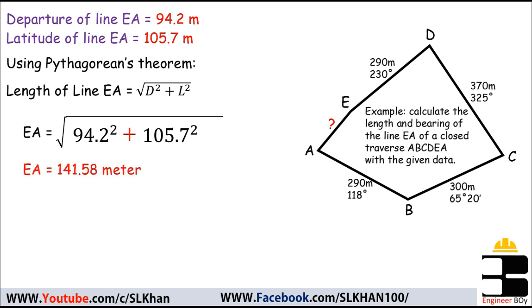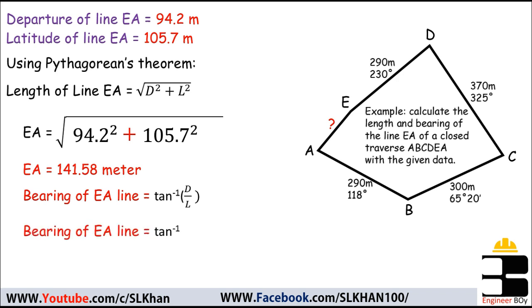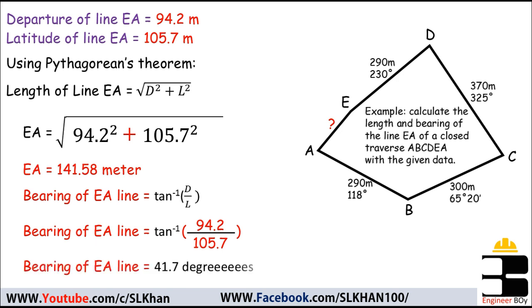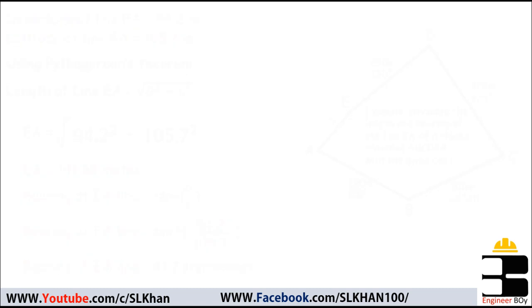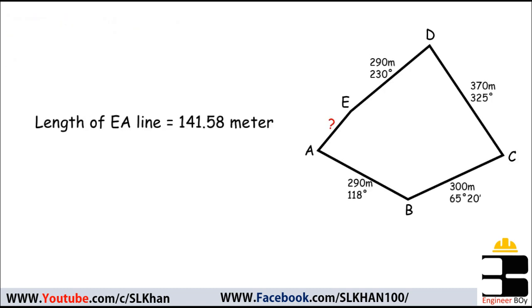Now let's calculate the bearing of line EA, which is the inverse tangent of departure divided by latitude. So bearing equals tan⁻¹(94.2 / 105.7), which gives a bearing of 41.7 degrees. That's how we calculate and determine the missing or affected side of a traverse when one side is missing.